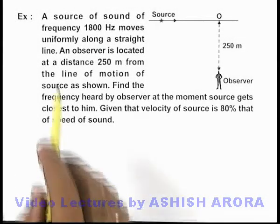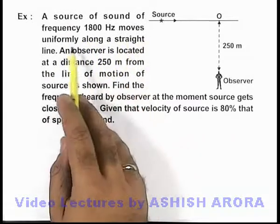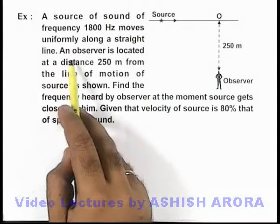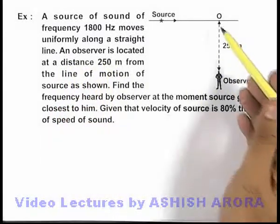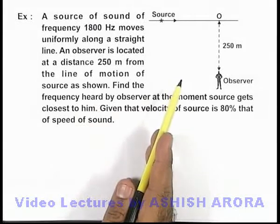In this example, we are given that a source of sound of frequency 1800 Hz moves uniformly along a straight line. An observer is located at a distance of 250 meters from the line of motion of the source, as we can see here.